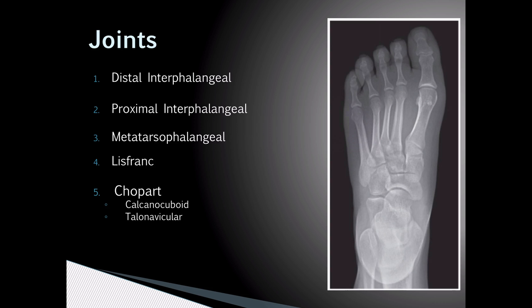Next, we will discuss the joints of the foot, of which there are five. The first being the distal interphalangeal joint, which is only present in the second through fifth toes. Next is the proximal interphalangeal joint. Third is the metatarsal phalangeal joint. Next, we have the Lisfranc joint. And lastly, we have the Chopart joint. The Chopart joint is actually made up of two joints: the calcaneal cuboid and the talonavicular.